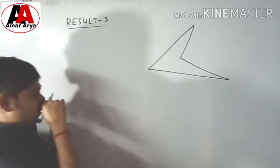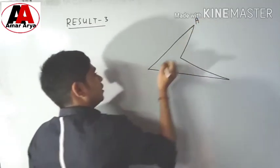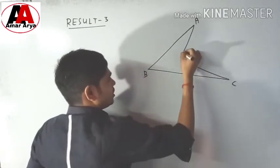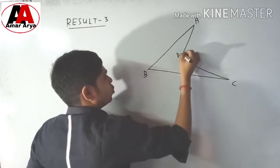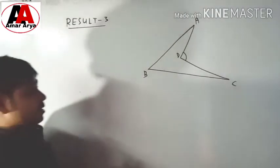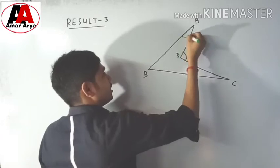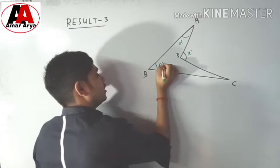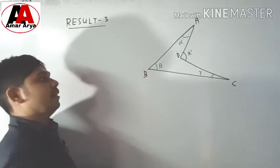Here is the value of A, here is B, and here is C. The value of this angle we can write as X degrees. The value of this angle is alpha degrees, this angle is beta degrees, and this angle is gamma degrees. Alpha, beta, and gamma are Greek letters — don't worry about that.